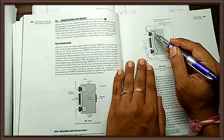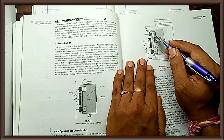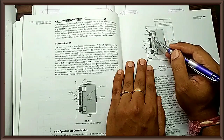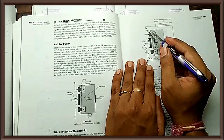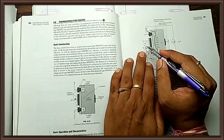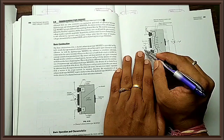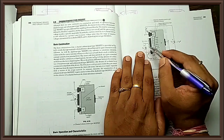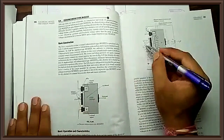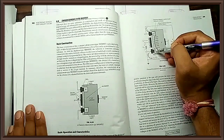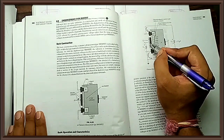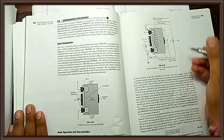Why does current flow from drain to source? Because this is a complete N path rich in electrons. Electrons get attracted towards the positive terminal, so electrons flow from source to drain while current flows from drain to source. The minimum value of VGS necessary to allow a measurable amount of current flow is called threshold voltage.